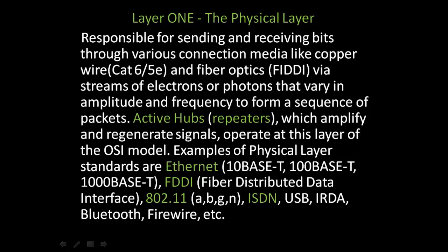Examples of physical layer standards are Ethernet — 10BaseT, 100BaseT, and 1000BaseT — FDDI or Fiber Distributed Data Interface, 802.11 A, B, G, or N, ISDN, USB, IrDA or infrared, Bluetooth, FireWire, etc.